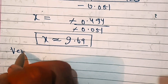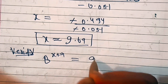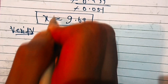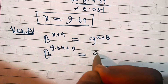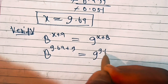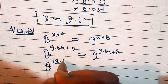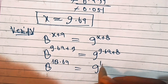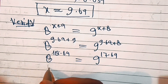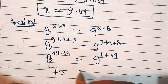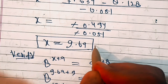Let's verify this. We will put this value in our original question, which was 8 power (x+9) equal to 9 power (x+8). Putting x = 9.69, we get 8 power 18.69 equal to 9 power 17.69. If we calculate these values, we get approximately 7.5 on both sides. So x equal to 9.69 is our solution.